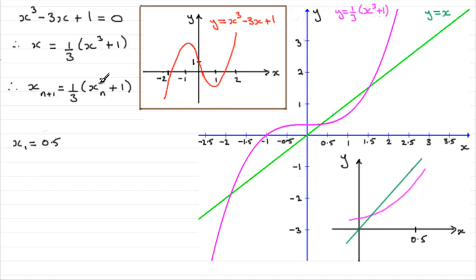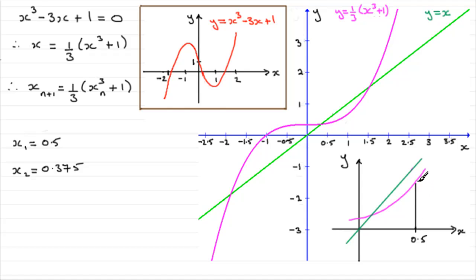We put 0.5 into the equation and worked out what a third of 0.5 cubed plus 1 came to. We called that our second approximation x₂. It was 0.375 if you did that on your calculator. What's happening is that our 0.5 was fed into the equation y equals a third x cubed plus 1, and what we got back was the value 0.375, shown here on the graph.